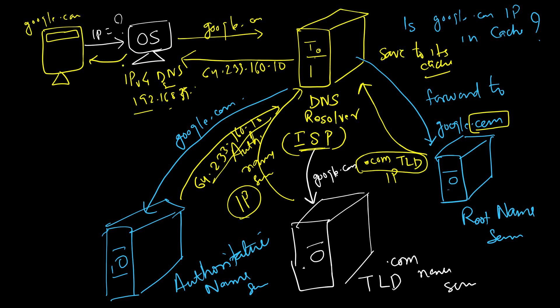The OS returns the same IP address to the browser, and now the browser can contact google.com using the IP address provided. That is how our Domain Name System works and how different components and servers interact with each other. I hope you understood this flow and learned something useful from this video.